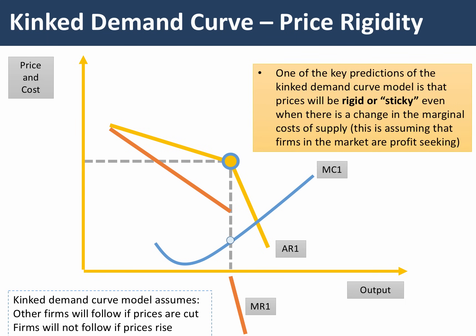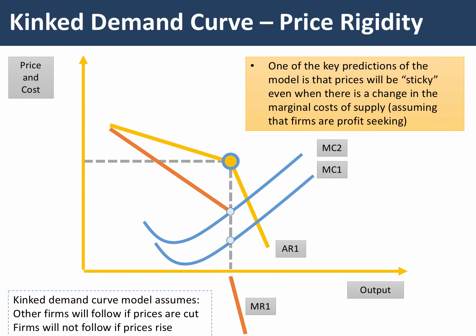This is the essence of the kinked demand curve model. Drawing in a marginal cost curve, there isn't a profit-maximizing equilibrium unless MC cuts the marginal revenue curve through the gap. One of the key predictions is that a business might reach a fairly stable profit-maximizing equilibrium at this price and have little incentive to change prices. The model predicts periods of relative price stability — what we call price rigidity or price stickiness — meaning prices stay fairly stable even if there's a change in the cost of supply.